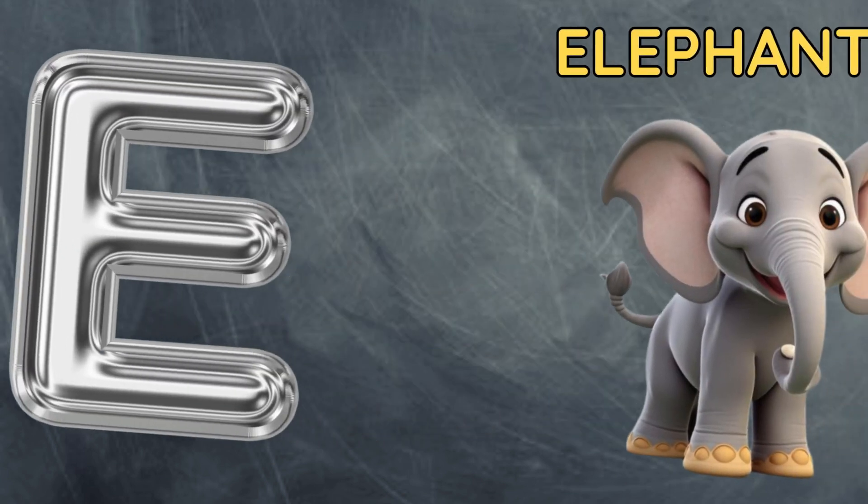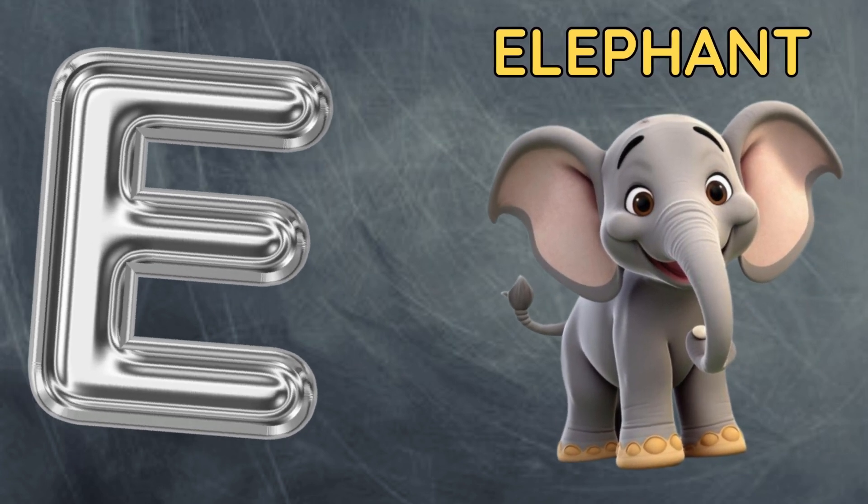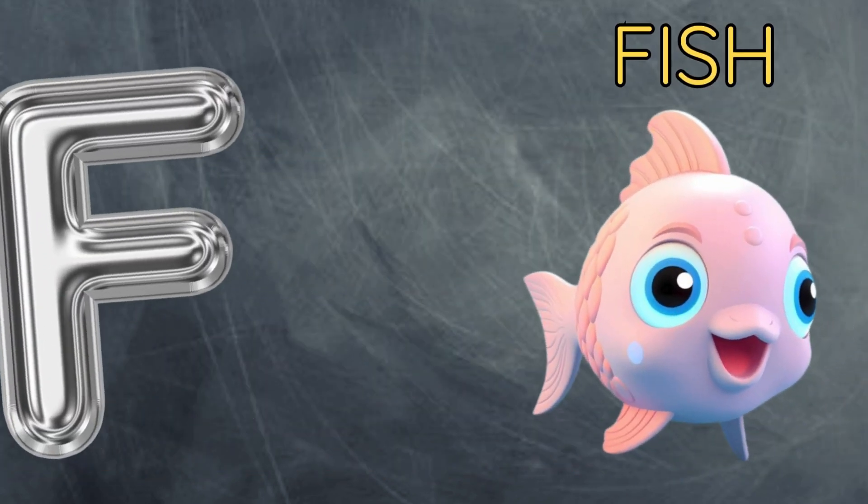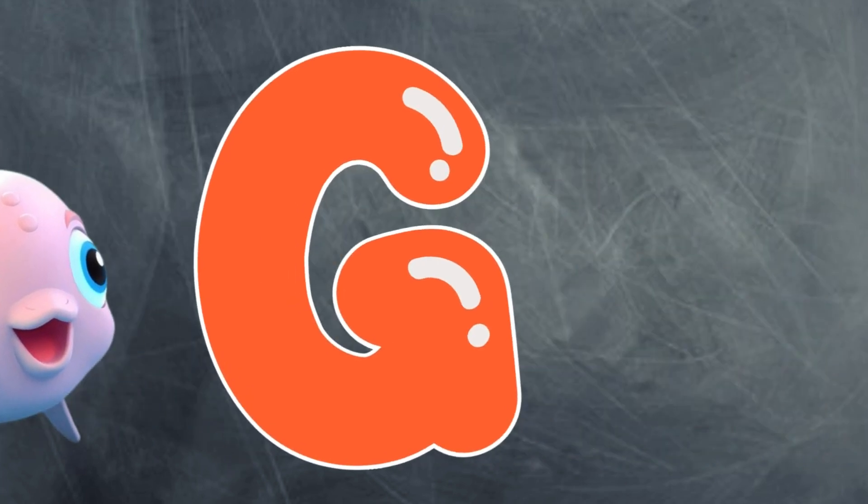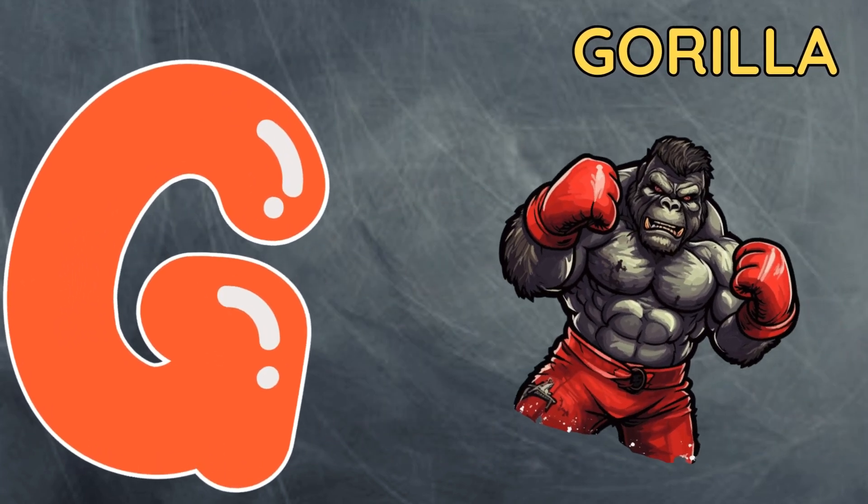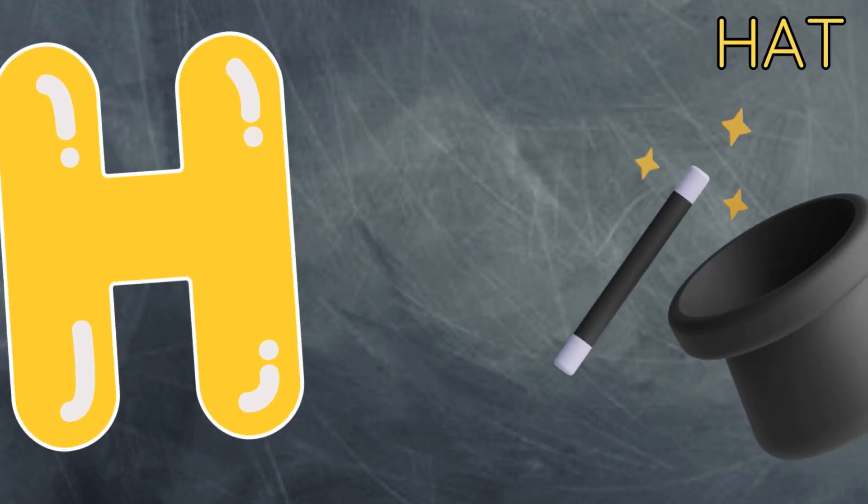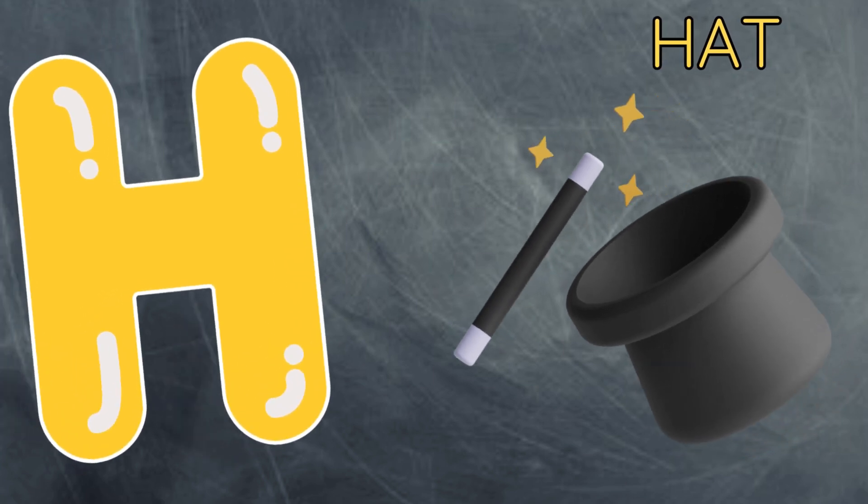E is for elephant, e-e-elephant. F is for fish, f-f-fish. G is for gorilla, g-g-gorilla. H is for hat, h-h-hat.